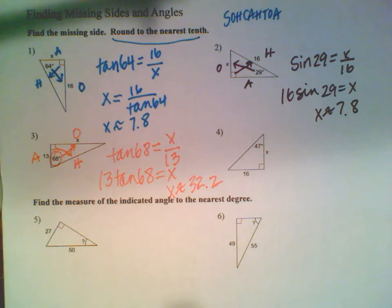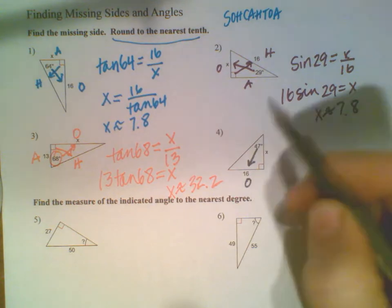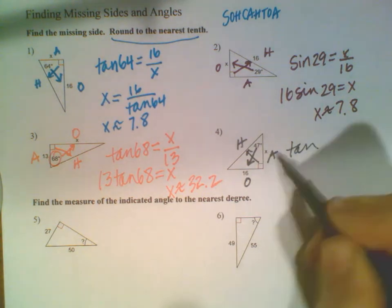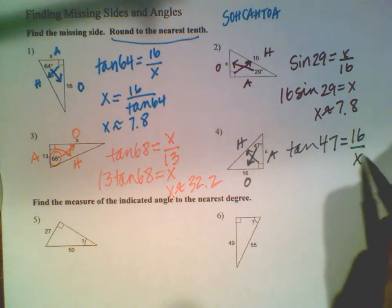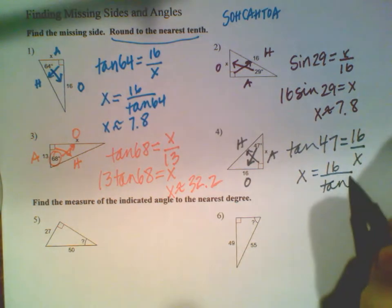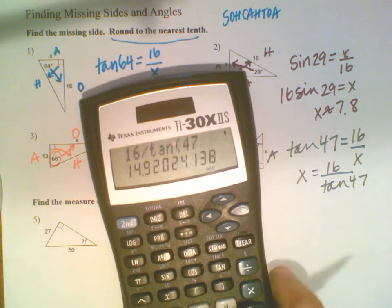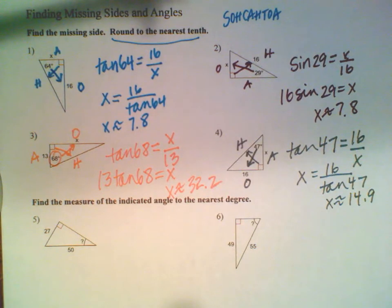One last one. Looks like another tangent. I was hoping I had a cosine one on here, but not a big deal. Just know what cosine looks like when you work through it. This is opposite, hypotenuse, adjacent. I have another tangent: opposite and adjacent. Tangent of 47 equals the opposite over the adjacent. X is in the denominator so I flip-flop. X equals 16 divided by tangent 47. I get about 14.9. X is roughly 14.9.